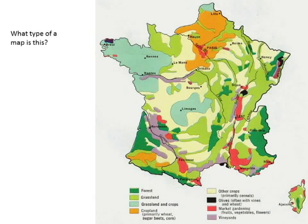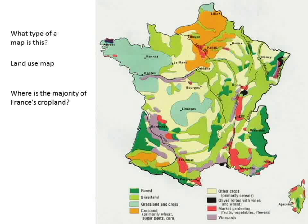What type of map is this? It shows forest, grassland, crops - it's a land use map. It's showing how the land is used. The majority of France is cropland, shown in an orange-ish color. Light green is grassland. Red would be market gardening - fruits, vegetables, flowers. Pink would be vineyards. France is, of course, famous also for wines, so the purple areas would be the vineyards.